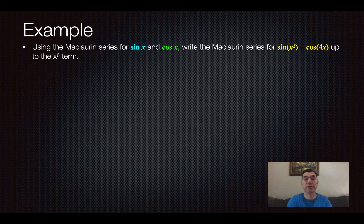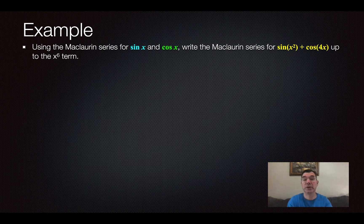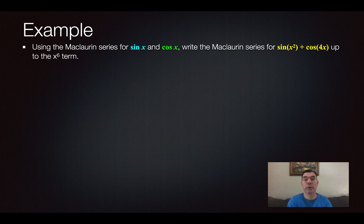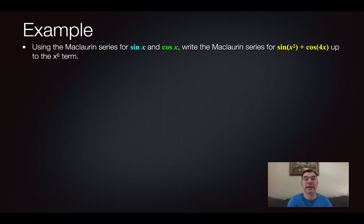So what we're going to do is we're going to use the Maclaurin series that we know for the function sine x and for the function cosine x, and we're going to use those to write the Maclaurin series for the function sine of x squared plus the cosine of 4x, and we're going to do that up to the x to the 6 term, making it a degree 6 Maclaurin polynomial.